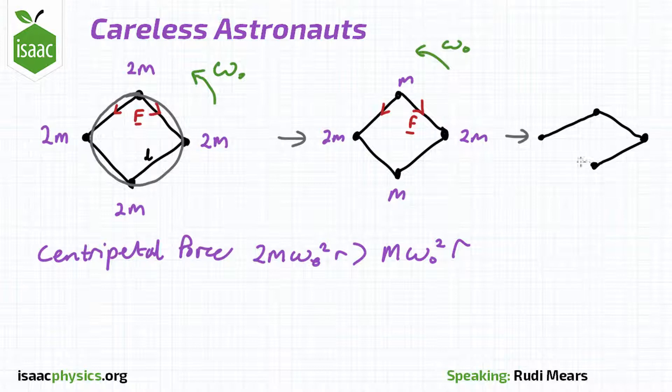We also know that the ropes need to be taut to keep the astronauts revolving, so let's suppose that the final state is a rhombus. Let's also say that the angle between the horizontal and the line connecting the two different kinds of astronauts is theta,